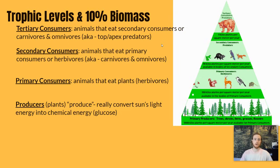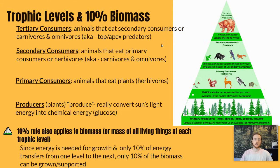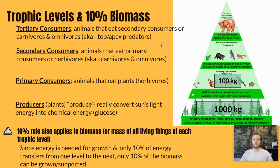Now we'll talk about the 10% rule as it applies to biomass. Because energy is needed for growth, and only 10% of the energy from one trophic level makes it to the next, that also means only about 10% of the biomass can be supported. Biomass refers to the total mass of all living things at a certain trophic level. Looking at this diagram: at the base we could support about 1,000 kilograms of producers, but since only 10% of the energy moves on to the primary consumer level, we can only support about 100 kilograms of primary consumers. That decreases by 90% again, giving 10 kilograms at the secondary consumer level, and finally only 1 kilogram of tertiary consumer biomass for every 1,000 kilograms of producer biomass.